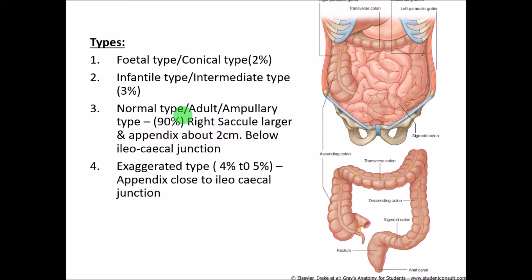There is also a fourth type called the exaggerated type, where the appendix is very close to the ileocecal junction. Usually the appendix is almost 2 cm below the ileocecal junction, but in the exaggerated type it is very close to the ileocecal junction, present in almost 4 to 5 percent of people.